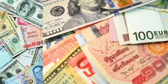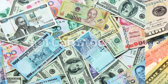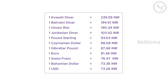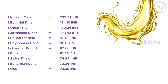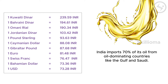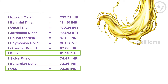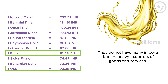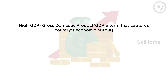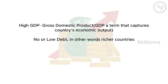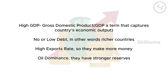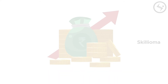Different countries have different currencies, and various countries have stronger currencies compared to the Indian rupee. The main reason for this domination is oil — India imports 70 percent of its oil from oil-dominating countries like the Gulf and Saudi Arabia. That's why the Kuwaiti Dinar is on top. European and American currencies dominate because those countries, while not necessarily oil exporters, are self-sufficient with low imports but heavy exports of goods and services. Countries with high GDP, low or no debt, high export rates, and oil dominance will have stronger currencies than the Indian rupee.